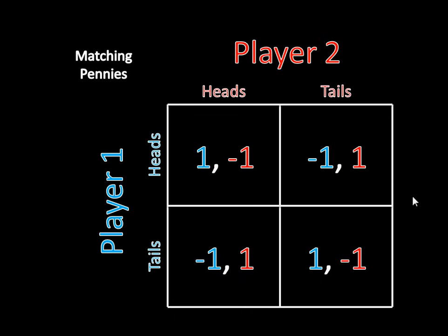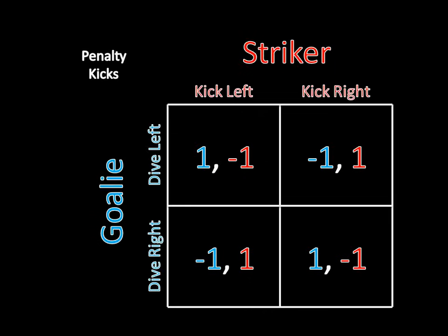A lot of games are like this. This is a diametrically opposed game — it's a zero-sum game because each of these payoffs adds up to zero: one plus negative one adds up to zero, all the way through. So you and your friend have diametrically opposed interests. This is a very common sort of strategic situation. For example, in a game of soccer penalty kicks, you have a striker trying to score a goal and a goalie trying to stop it. The striker wants to kick in the direction the goalie is not diving, and the goalie wants to guess correctly. So this applies to all sorts of situations, especially in sports where there are diametrically opposed preferences.